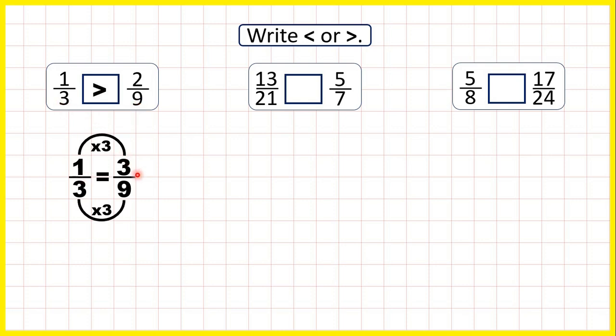Because 1/3 is equivalent to 3/9. Now we have 13/21 and 5/7. 21 is in the 7 times table, so we can find a fraction equivalent to 5/7 with a denominator of 21. 7 times 3 is 21, and what we do to the denominator, we need to do to the numerator as well. 5 times 3 is 15. So because 5/7 is equivalent to 15/21, we know that 5/7 must be larger than 13/21, because 13 is less than 15.